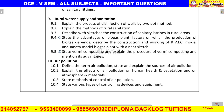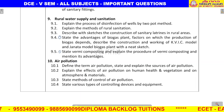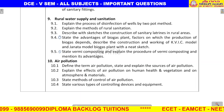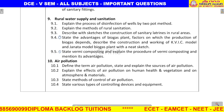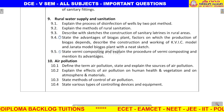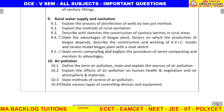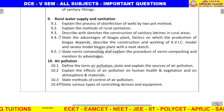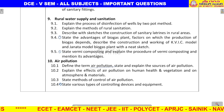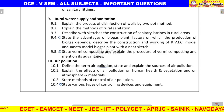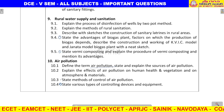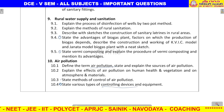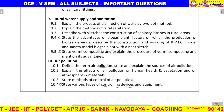Next and final unit: air pollution. We have to study the science of controlling air pollution. State the controlling devices and equipment for air pollution — this is the most important question in air pollution.